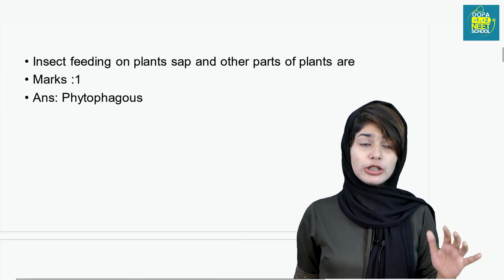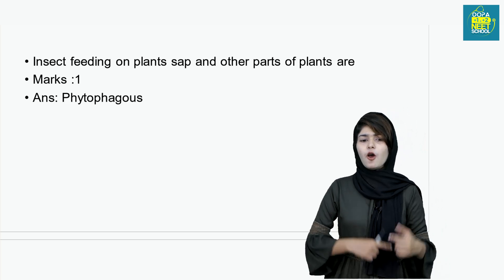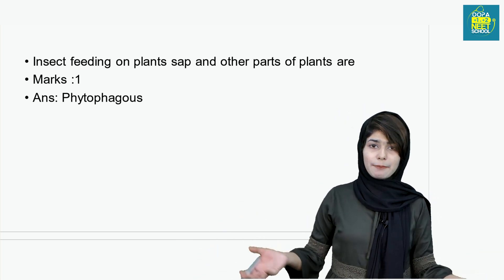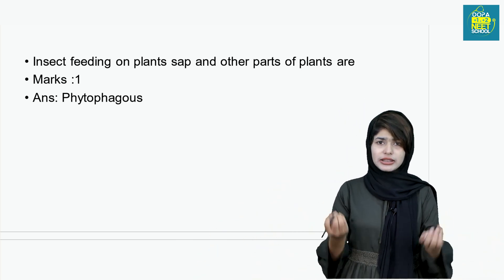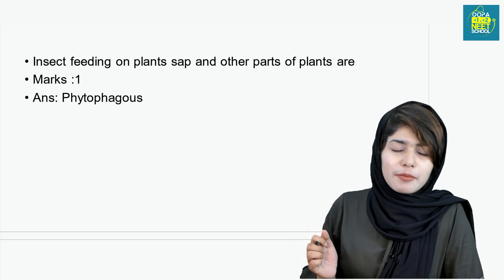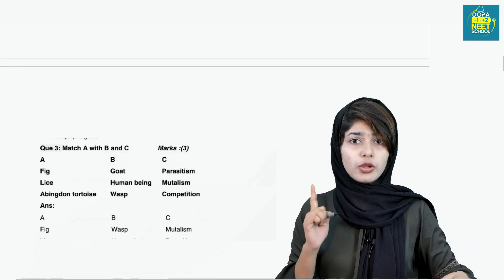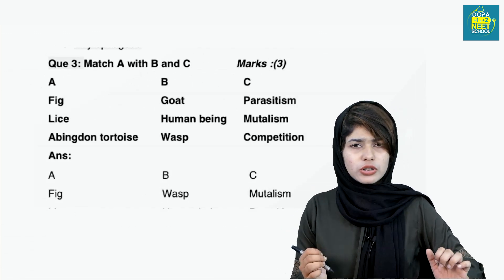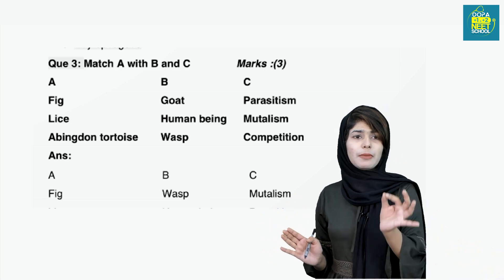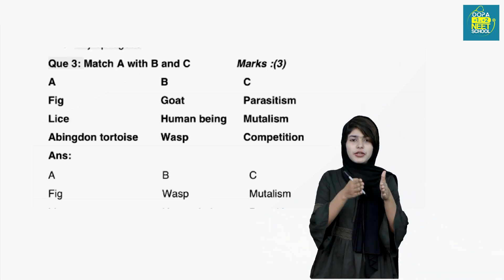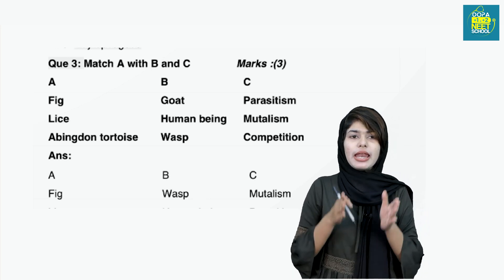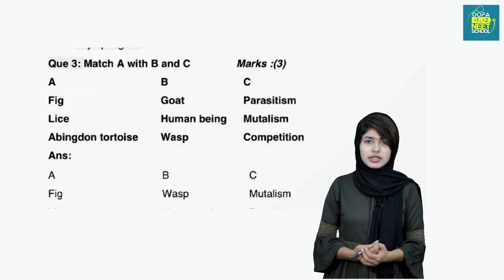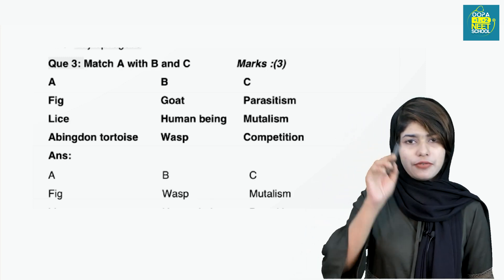One more question: insects feeding on plant sap and other parts of plants are called what? This is one more important one-mark question from previous years. Match A with B and C — A with fig and lice and Abington tortoise, B with goat and human being and wasp, C with parasitism, mutualism, and competition. So the answer is A, B, C.